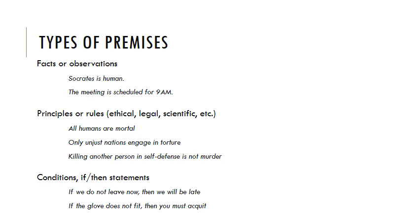We can also use principles or rules — ethical principles, legal principles, scientific principles. These are more general statements than an individual fact or observation. For example, all humans are mortal — that's a scientific principle. Only unjust nations engage in torture — that's an ethical principle. Killing another person in self-defense is not murder — that's also an ethical and legal principle. These are more general types of statements that cover a number of situations, as opposed to a fact which is a singular thing.